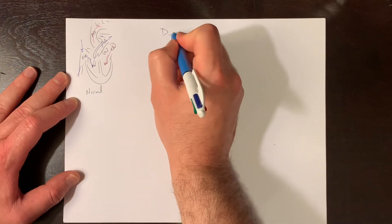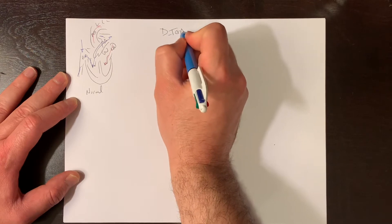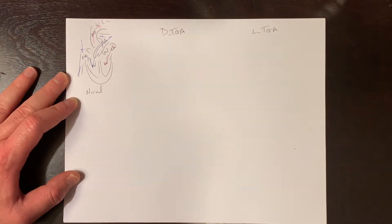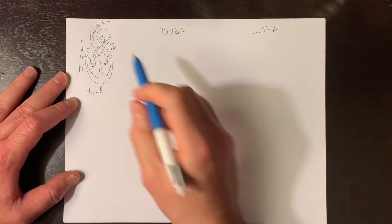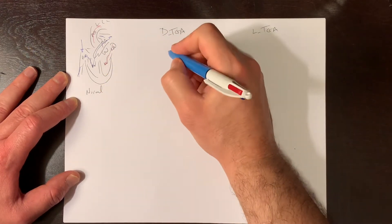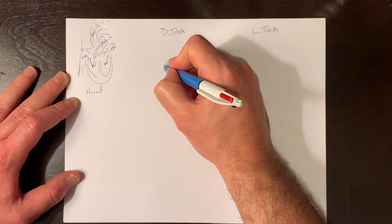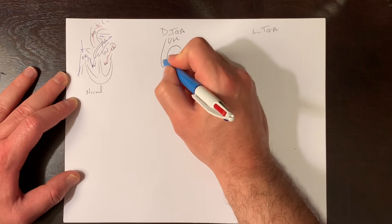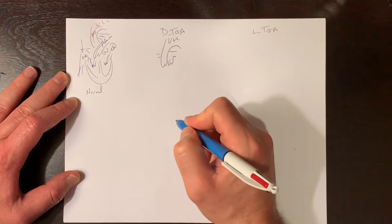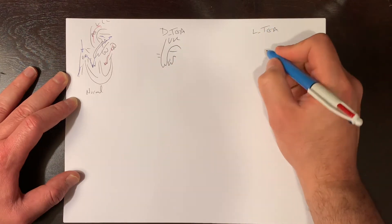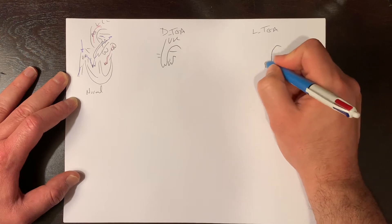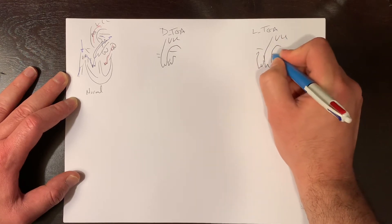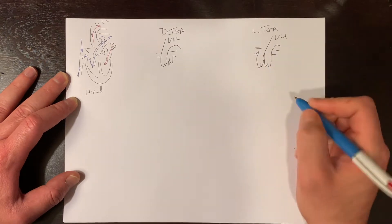We'll discuss D-transposition of the great arteries and L-transposition of the great arteries. In both, the aorta and the pulmonary artery are parallel. In D-transposition, the aorta is anterior and typically to the right of the pulmonary artery, whereas in L-transposition, the aorta is anterior and to the left of the pulmonary artery.